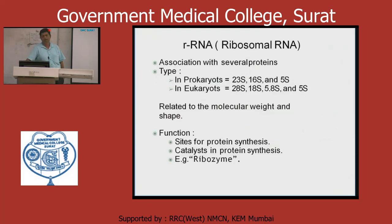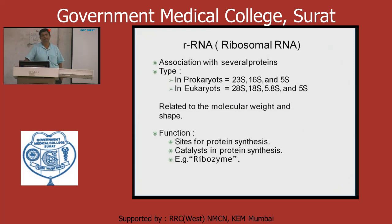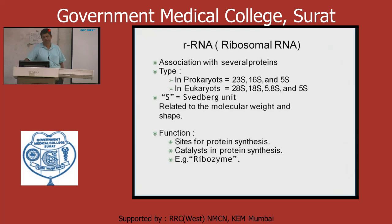Regarding the three RNAs in translation: all three RNA types — ribosomal RNA, mRNA, and tRNA — take part in the process. In prokaryotes there are 23S, 16S, and 5S rRNA subunits. In eukaryotes there are 28S, 18S, 5.8S, and 5S subunits with Svedberg (S) units. This is important for MCQs.